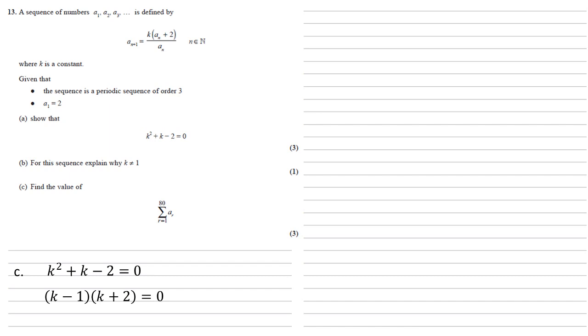Factorizing this gives us K minus 1 times K plus 2 equals 0. We're told that K can't equal 1. Hence K must equal minus 2.